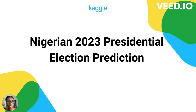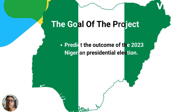February 25, 2023 was Nigeria's presidential election. The goal of my project was to predict the outcome of the election by using Twitter data to evaluate the sentiments of people based on their preferred candidates.